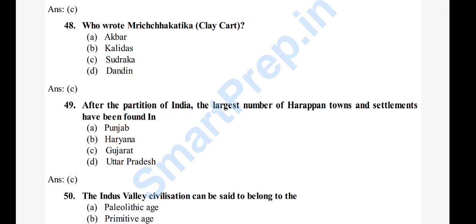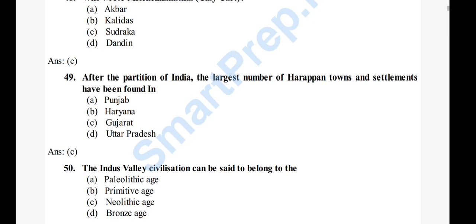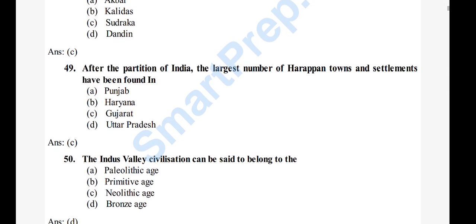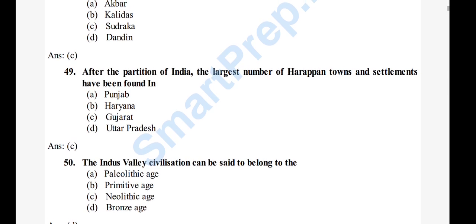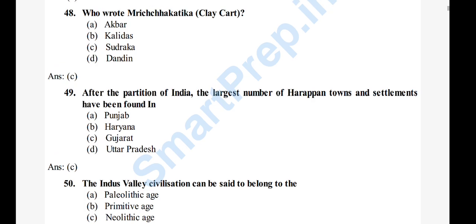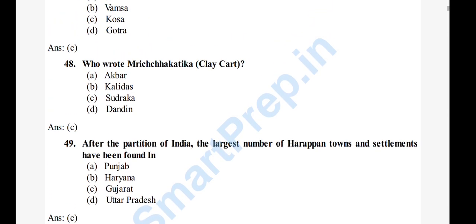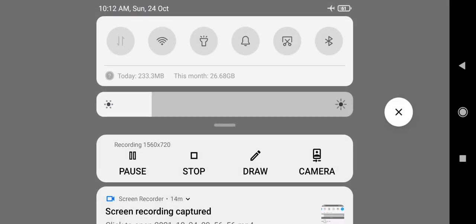Question 50: In the history of civilization, Harappan civilization can be said to belong to the — A) Paleolithic age, B) primitive age, C) Neolithic age, D) Bronze age. The right answer is option D, Bronze age. Thank you so much.